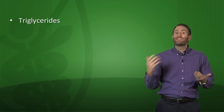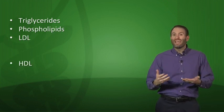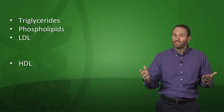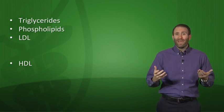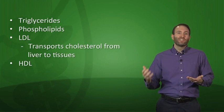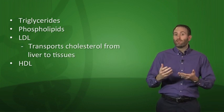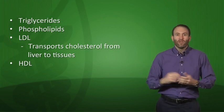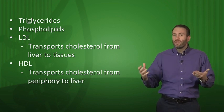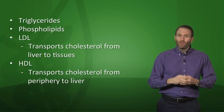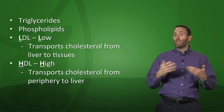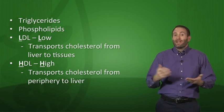Lipids and lipoproteins include triglycerides, phospholipids, LDL, and HDL. LDL — the so-called bad cholesterol — is only bad in excess. LDL transports cholesterol from the liver to the tissues. HDL, the good cholesterol, transports cholesterol from the periphery back to the liver. A good mnemonic: keep LDL Low and HDL High.